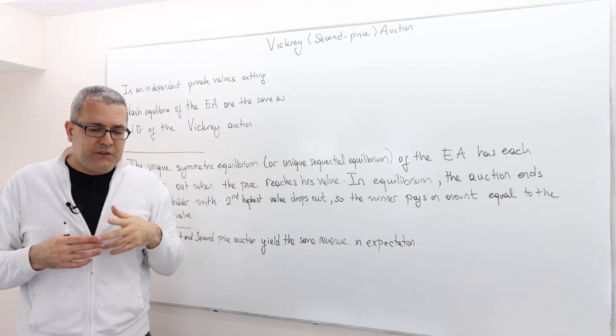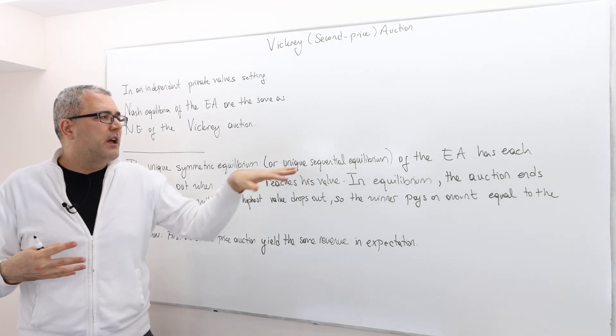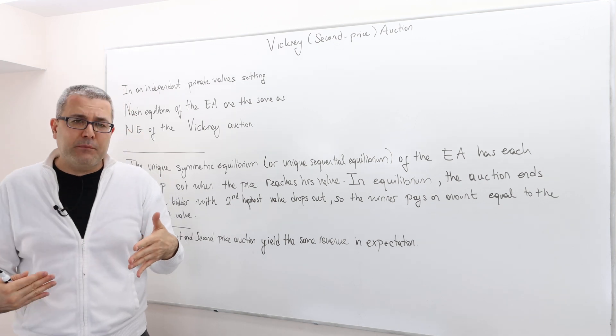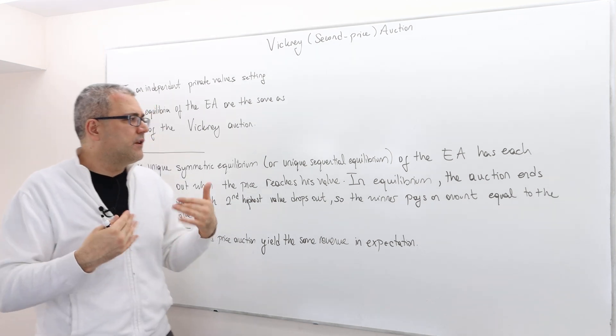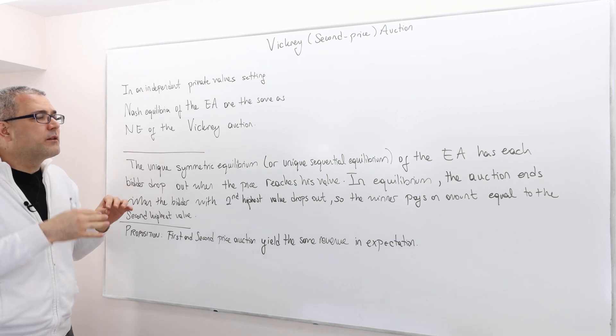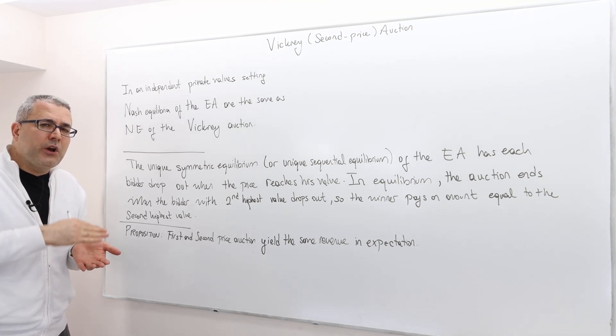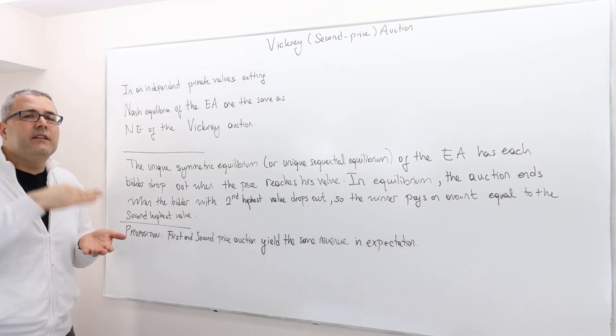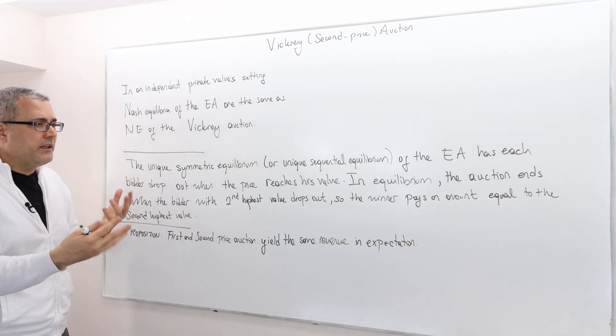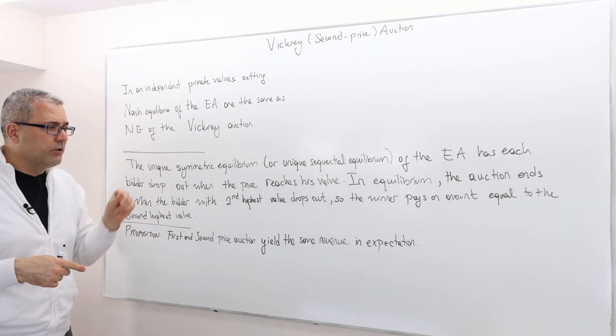And the sequential equilibrium is an equilibrium concept that we use in games with incomplete information, but in extensive form games. So the unique sequential equilibrium of the English auction has each bidder dropping out when the price reaches his value. In equilibrium, in a sequential equilibrium in the English auction, as the price rises, each bidder quits or drops out when the bid hits his or her valuation. In equilibrium, the auction, the English auction, ends when the bidder with the second highest value drops out.